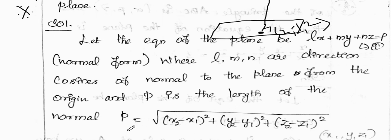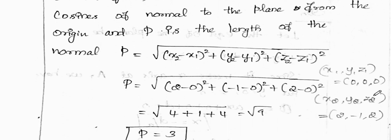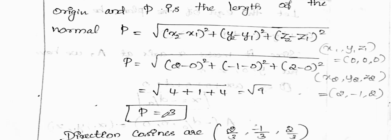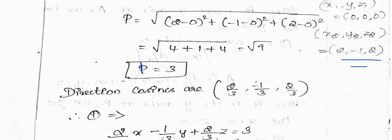The length of the perpendicular is the square root of (x2 - x1)² + (y2 - y1)² + (z2 - z1)². For the foot point (2, -1, 2), the distance from the origin is the square root of 4 + 1 + 4 = 3. So P = 3, and the direction cosines are L = 2/3, M = -1/3, N = 2/3.